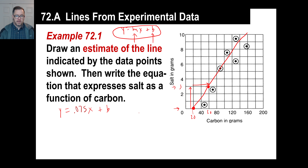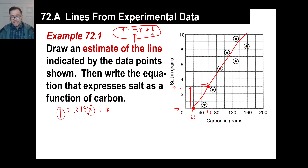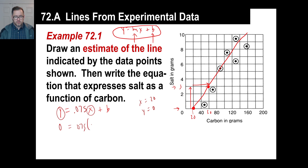Turn 3 over 40 into a decimal - that gives us 0.075. Now we need to find B, the y-intercept. We need a value for x and a value for y. The easiest point shows x equals 20 and y equals 0. So: 0 equals 0.075 times 20 plus B, which gives us 0 equals 1.5 plus B, so B equals negative 1.5.